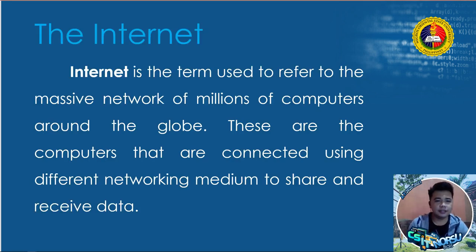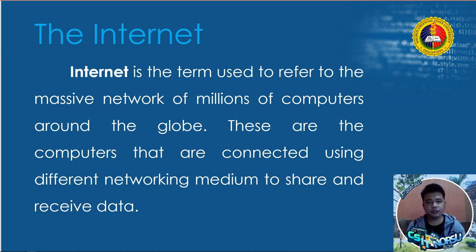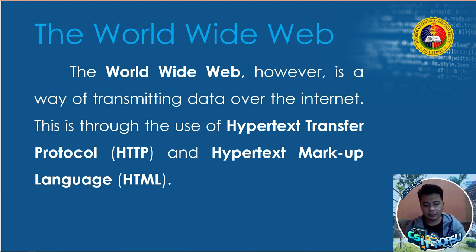The Internet is the term used to refer to the massive network of billions of computers around the globe — computers that are connected using different network mediums to share and receive data. If two or more computers are connected to each other, they are already on a network. However, if we talk about millions of computers around the globe connected together to transmit data, that is the Internet. The World Wide Web, however, is just a way of transmitting data over the Internet — through the use of Hypertext Transfer Protocol (HTTP) and Hypertext Markup Language (HTML).